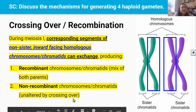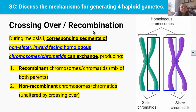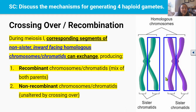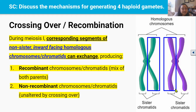Let's start with the first cause of genetic variation called crossing over, also known as recombination. When homologous pairs of chromosomes pair up at the early stages of meiosis 1, crossing over can occur. Crossing over is the exchange of corresponding genetic material between non-sister, inward-facing homologous chromosomes or chromatids.